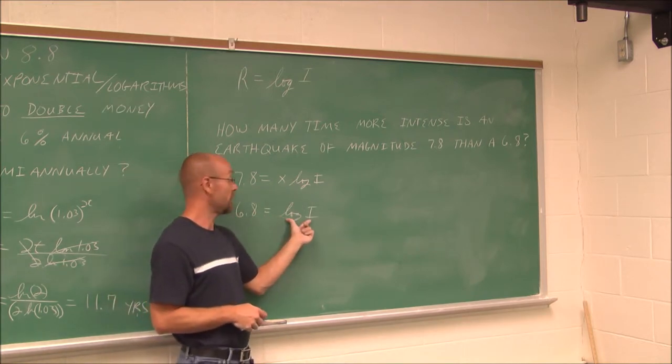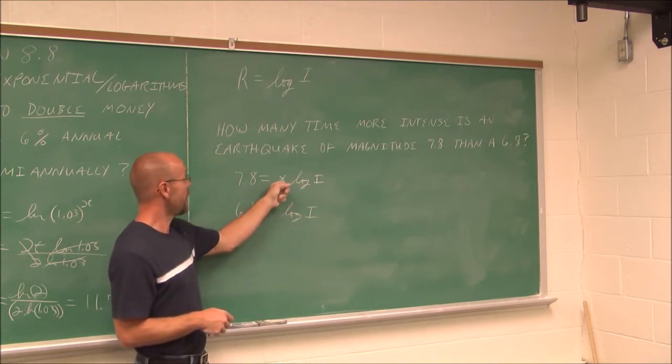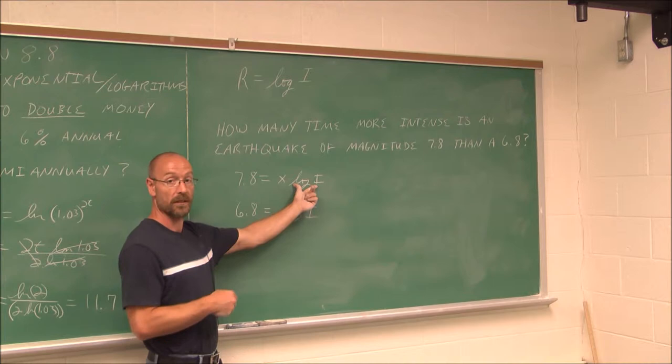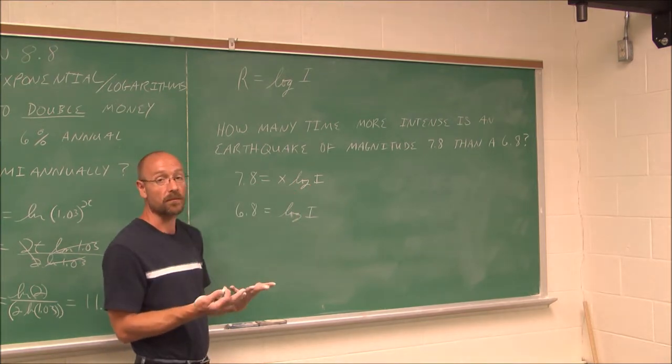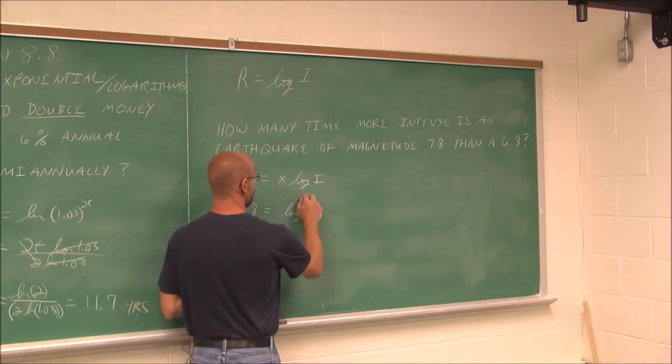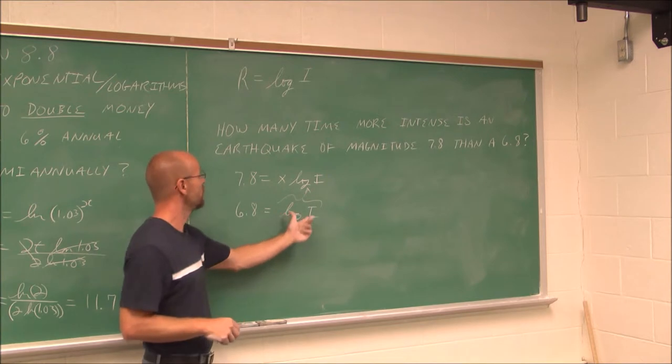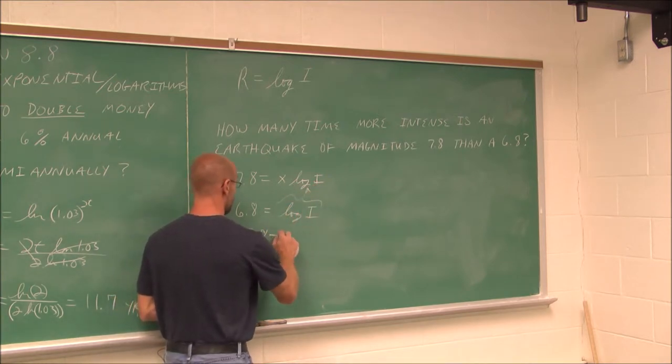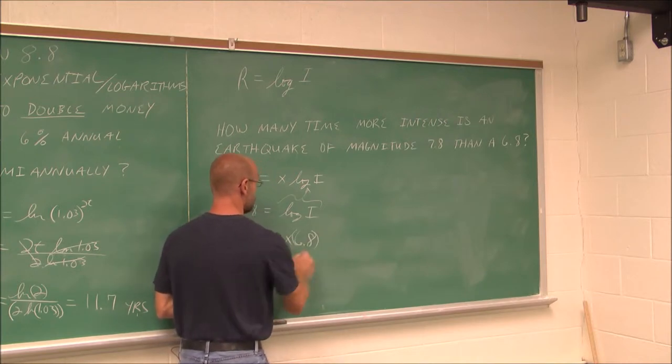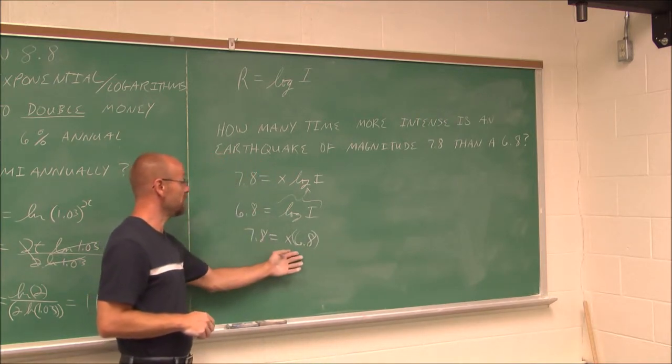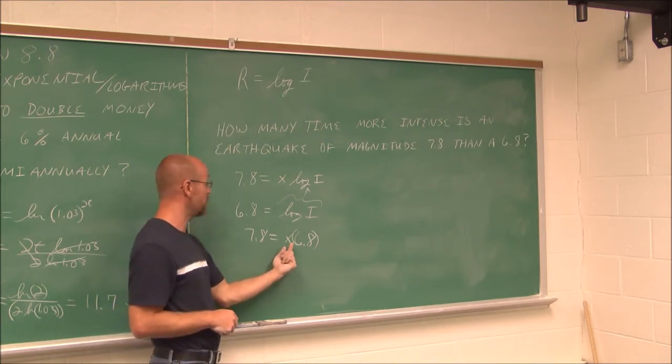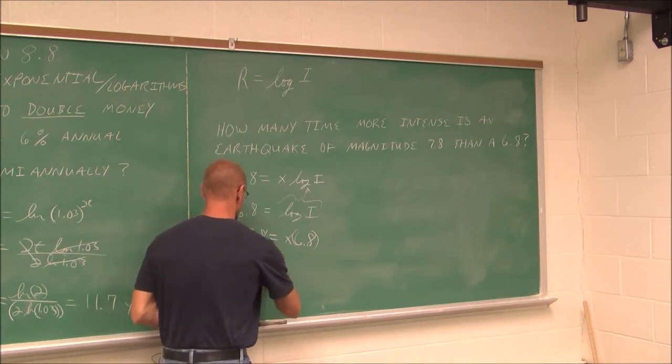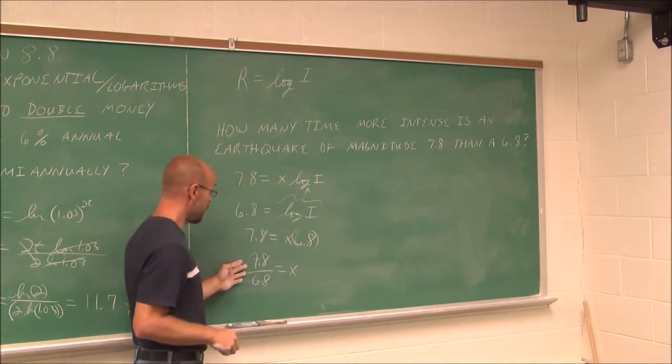I want to know how many times more intense is this value relative to this value. I was able to translate it into these statements. 6.8 is some log of the intensity. x times this value, how many times more, is 7.8? Now I can actually do essentially a substitution. If this value is the same as that value, I can just substitute it. So 7.8 is how many times that of 6.8?